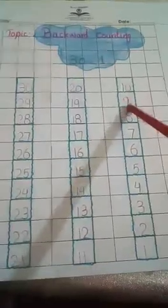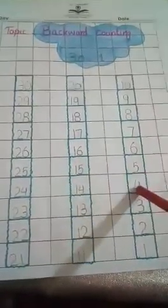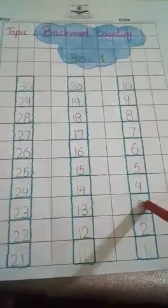10, 9, 8, 7, 6, 5, 4, 3, 2, 1. Guide your child according to this pattern and help in writing.